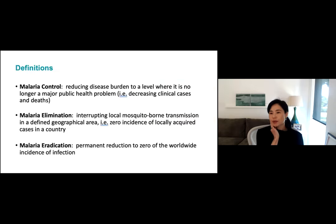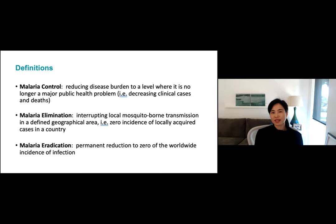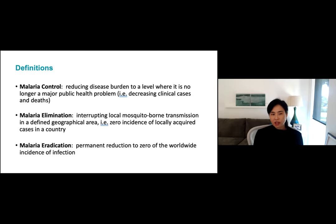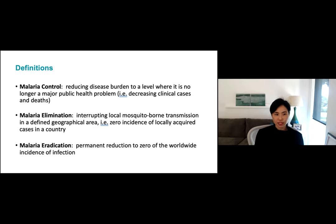Now getting into malaria elimination and eradication. Some definitions: control means reducing the burden of disease so it's no longer a major problem — you don't want disease or death. Elimination is interrupting transmission in a defined geographical area, like a region or country. Eradication is permanent reduction to zero worldwide — the only human infectious disease we've eradicated is smallpox. This is something people are thinking about more with COVID, for example, as New Zealand and Australia previously tried to reach elimination, though some of those goals might be revisited given the challenges we've had.